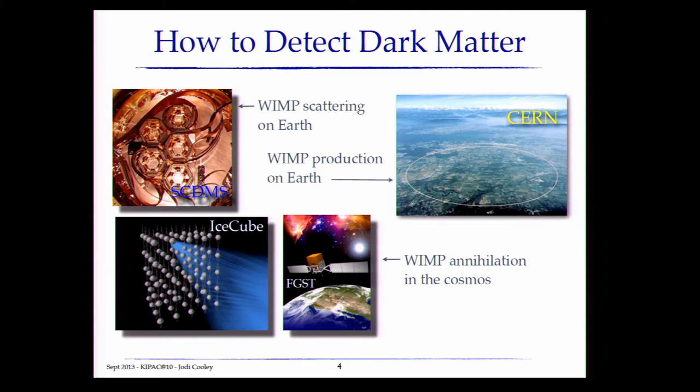We've come up with various methods for being able to detect this kind of dark matter. Dark matter is thought to exist in a halo around our galaxy, and if this is the case, in theory we could build a detector right here on Earth and wait for the dark matter to interact in those detectors. That's called direct detection, and it's what SuperCDMS, amongst other experiments — which we'll be hearing about from Peter Rydell in just a few minutes — focuses on.